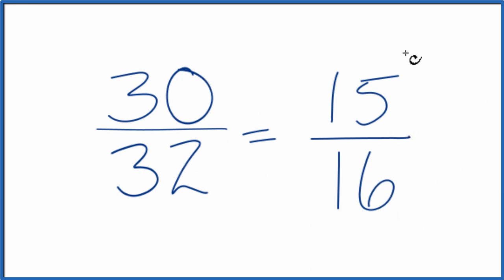And these are equivalent. If you divide 30 by 32 or 15 by 16, you'll get the same number. They are equivalent fractions. We've just simplified 30/32 down to 15/16ths. This is Dr. B, thanks for watching.